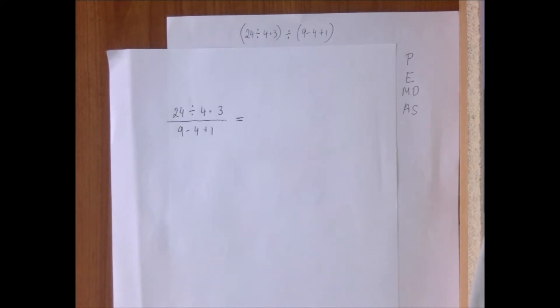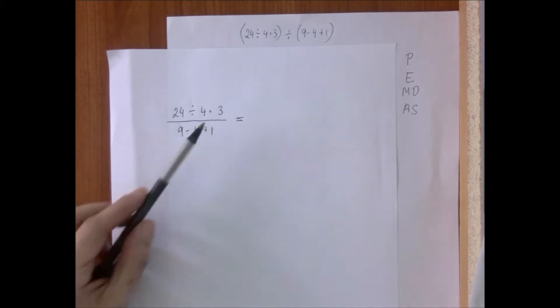Both numerator and denominator sets are people to make very common errors. So in the numerator, we have a division and a multiplication.